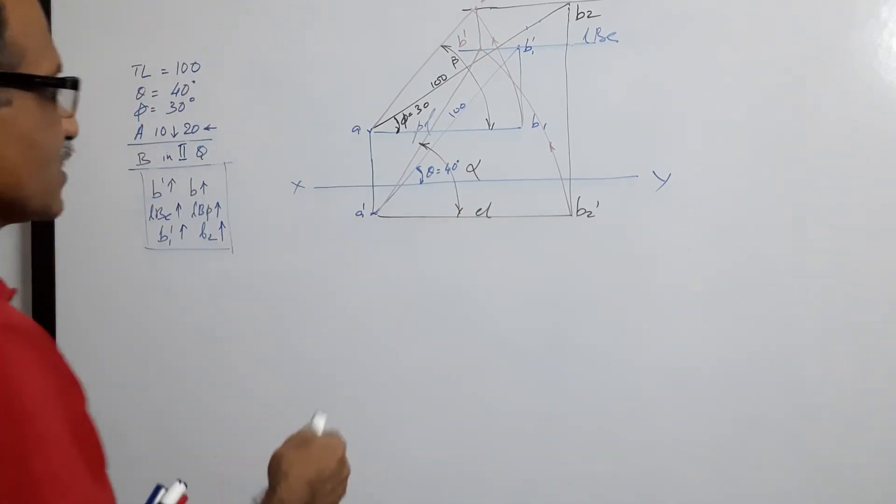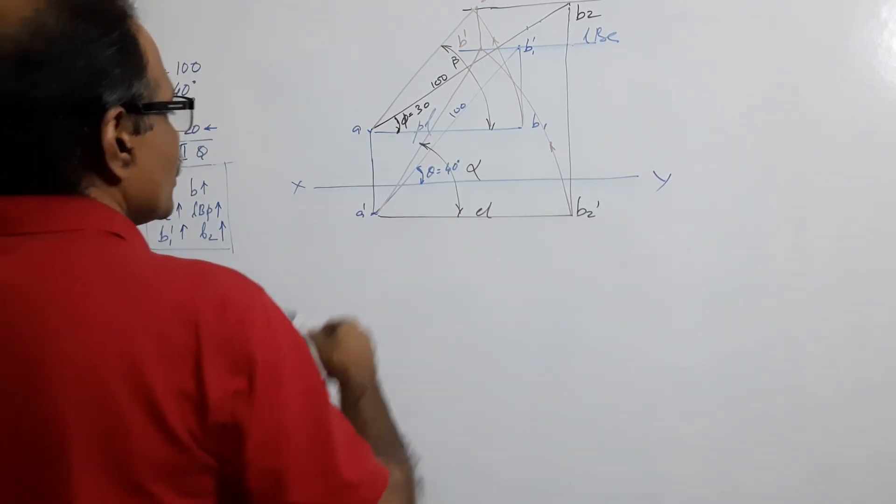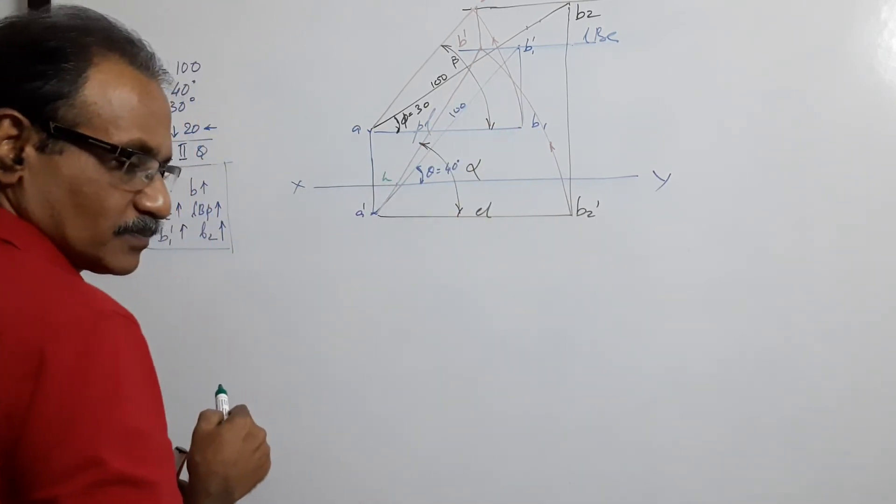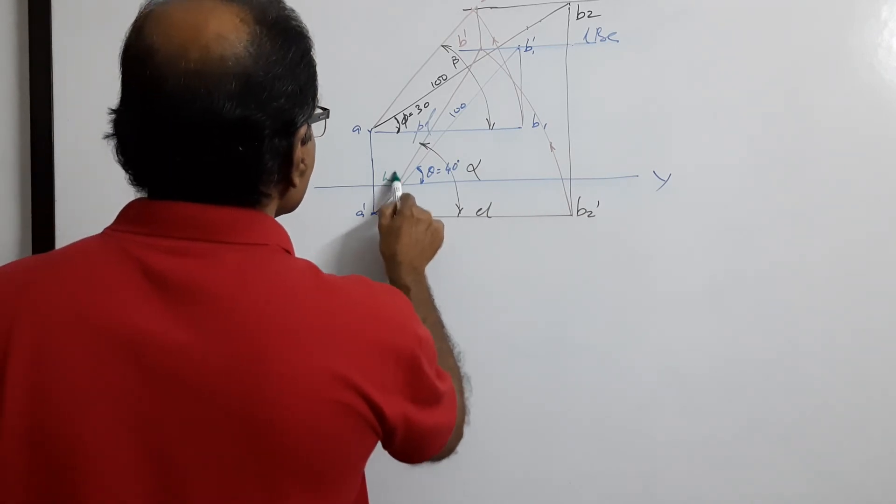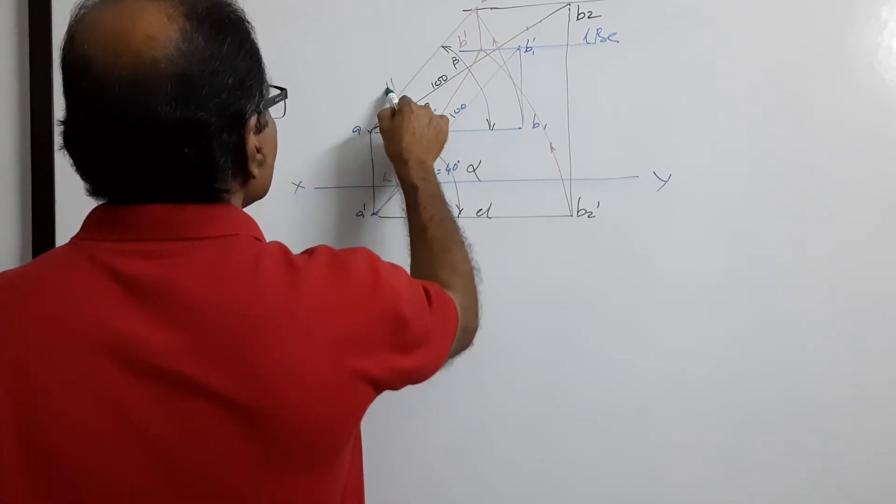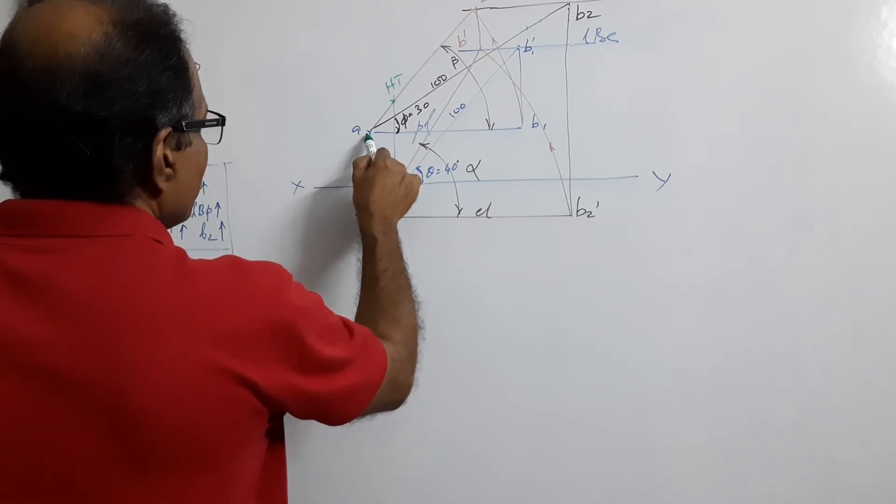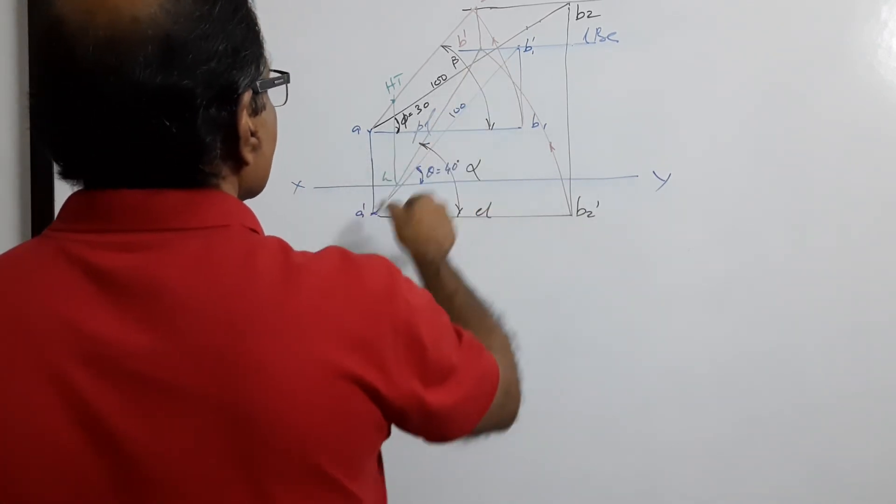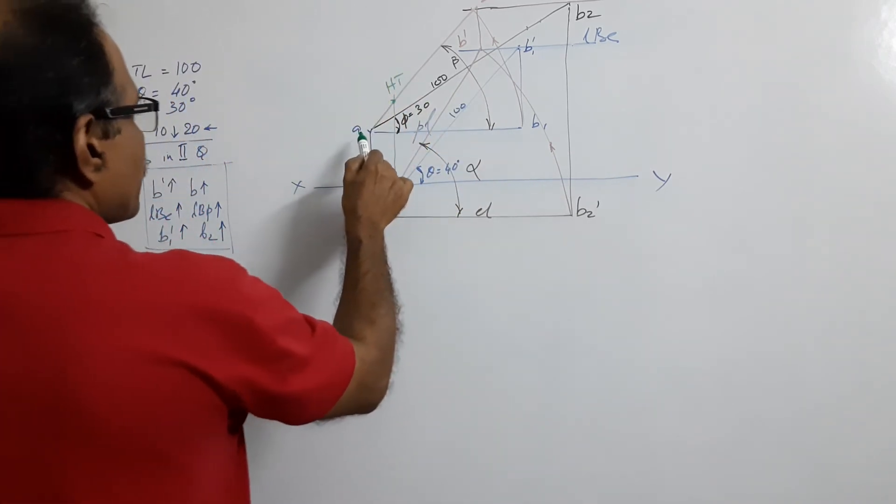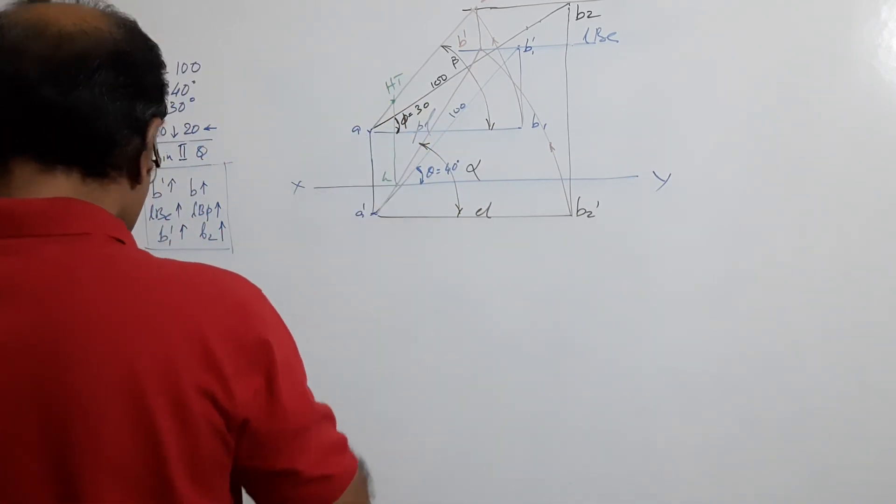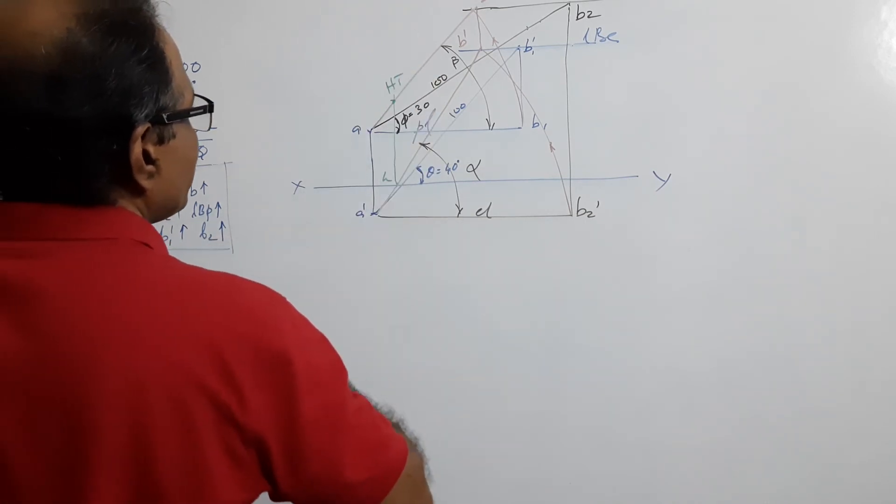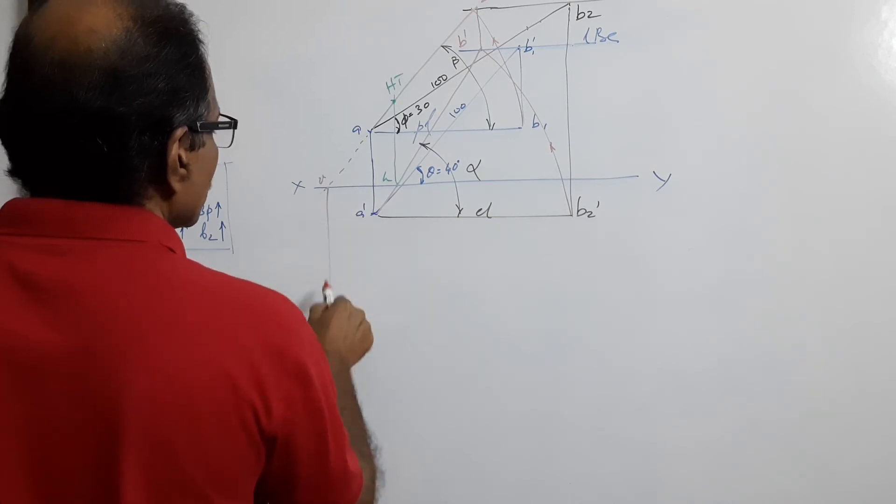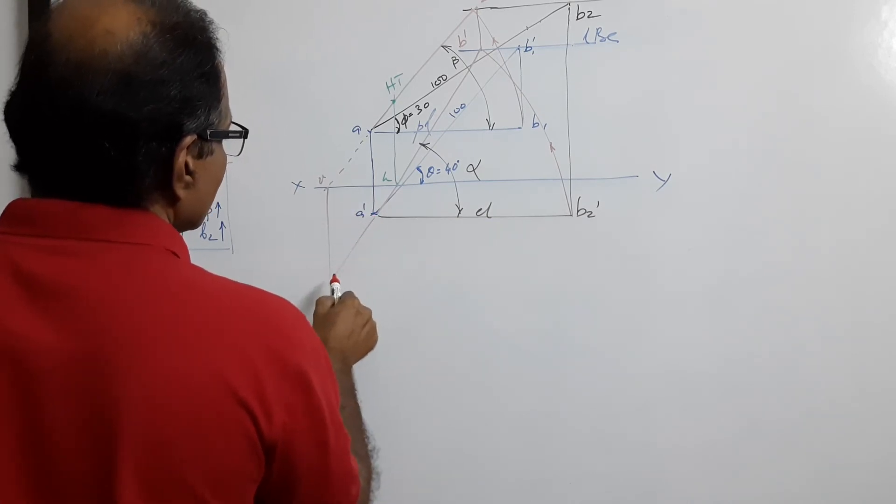Then to locate the traces, you know, the elevation cut XY at H. Draw a vertical through H. This is HT. Elevation when extended, sorry, this is elevation, so this is HHT no problem. The plan when extended, AB is the plan, plan when extended cut XY at V. So this is V, draw a vertical through V and extend the elevation.